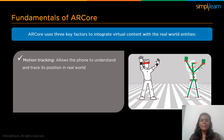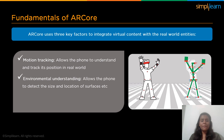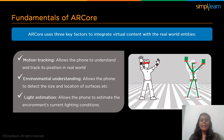Next is environmental understanding. The basic function of developing an app is to implement it on a real world environment based on the factors of need and functionality. This process helps your device to detect the size and location of the surface you are on. And at last we have light estimation. Lighting is the key factor of creating realistic AR experiences. This lighting API analyzes the given images with detailed information on lightings in a scene, which helps to render virtual objects and interactions.